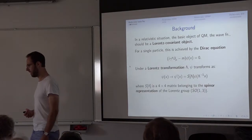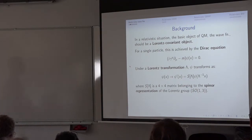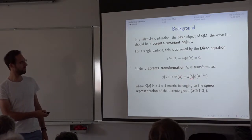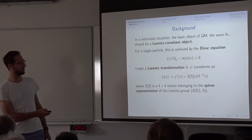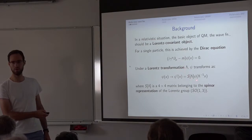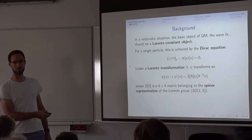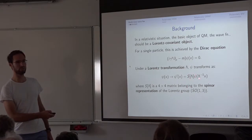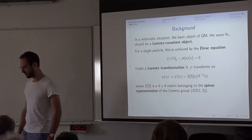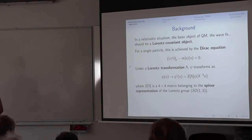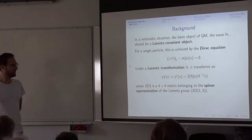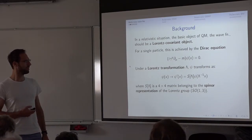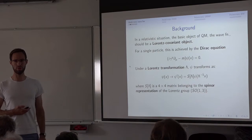Under a Lorentz transformation, ψ will transform to a different ψ-prime, and its functional expression is given by some matrix depending on the Lorentz transformation λ, times ψ of λ-inverse x. What is important here is that you have a certain matrix in front — the matrices S(λ) — also four-by-four matrices, which form a spinor representation of the Lorentz group. This is the well-known theory of the Dirac equation in relativistic quantum mechanics.